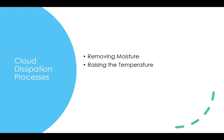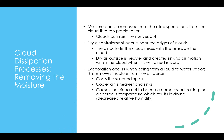Finally, let's look at cloud dissipation processes. The two main mechanisms are removing moisture or raising the temperature. Moisture can be removed through precipitation — on a hot summer day, a thunderstorm develops and a heavy downburst of rain literally rains the cloud out. You can also get dry air entrainment near the edges of clouds, where air outside the cloud mixes with the air inside. This dry air is heavier and creates sinking air motion within the cloud, causing cloud dissipation. Moist air is lighter; dry air is heavier.